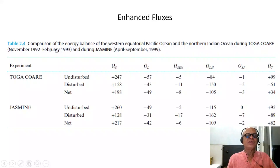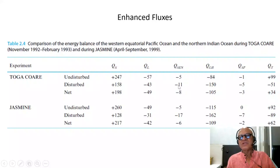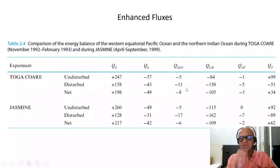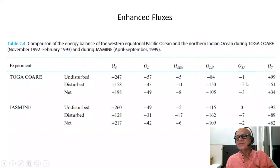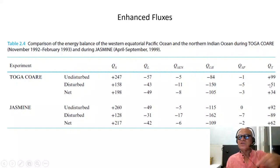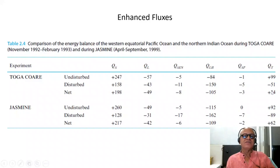This surface heat flux signal was observed during TOGA COARE and JASMINE, which took place in 1992, 1993, and 1999. In the undisturbed, disturbed, and net regions, you can see that shortwave, longwave, and latent heat loss — the latter being much larger than both — along with sensible heat loss, all contribute. These are ocean data. The stability parameter and total heat exchange show that in the undisturbed region there is surface heating, while in the disturbed region there is a loss from the surface, which goes into destabilizing the atmosphere.